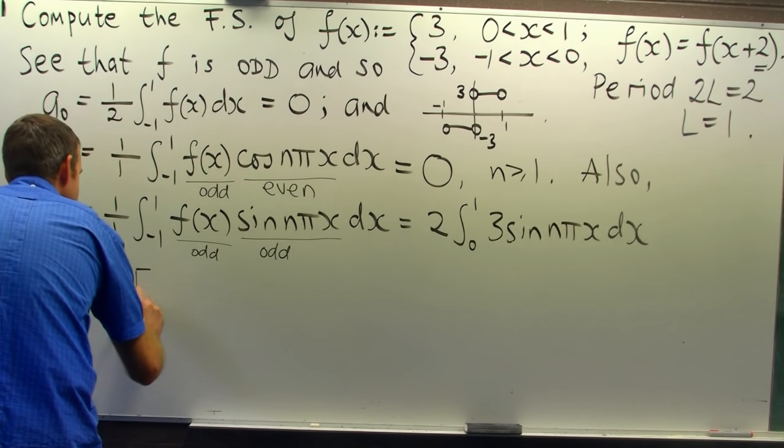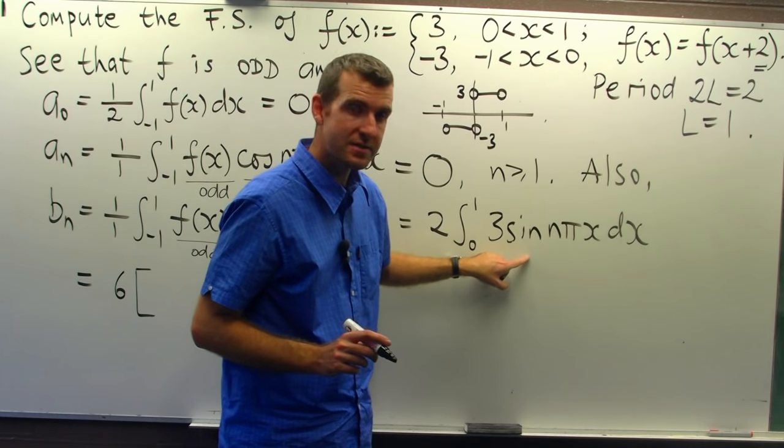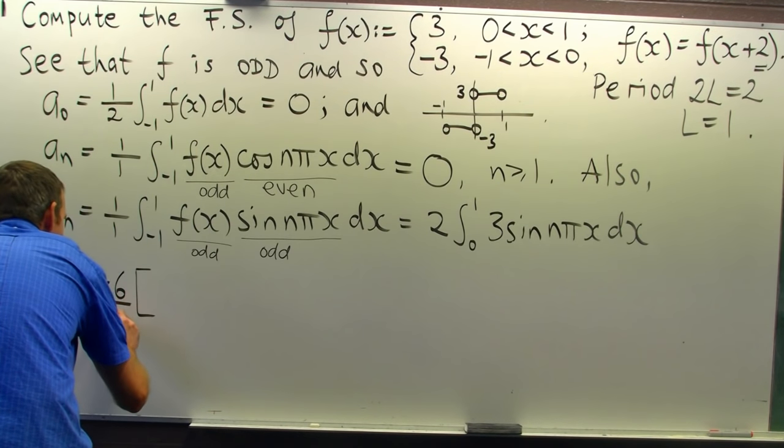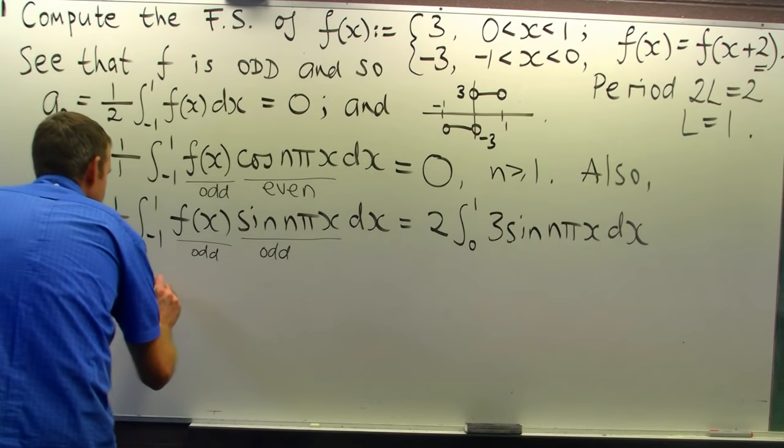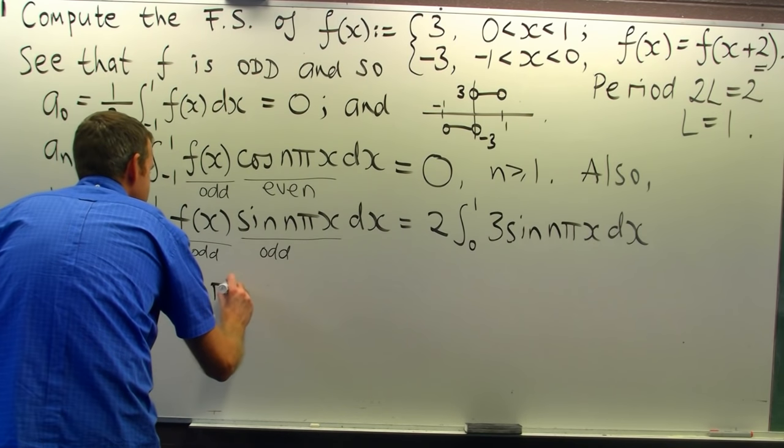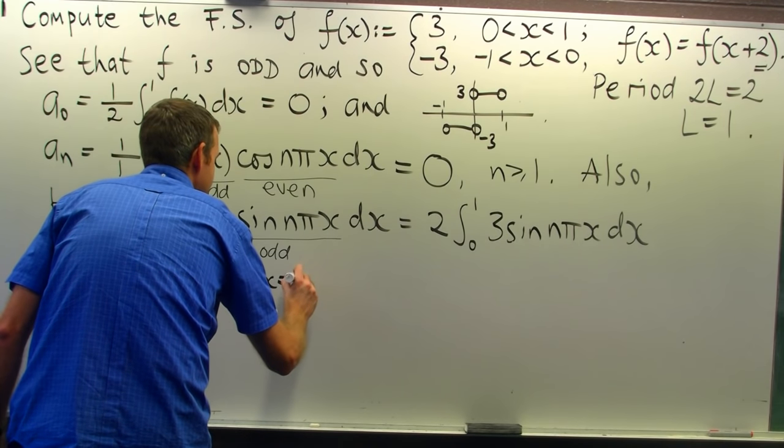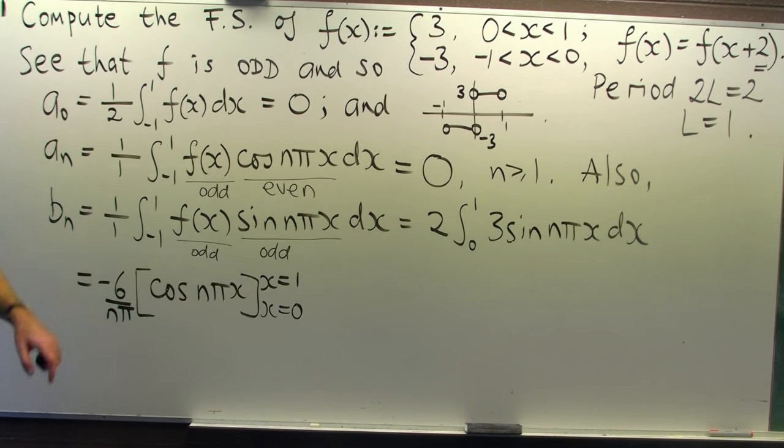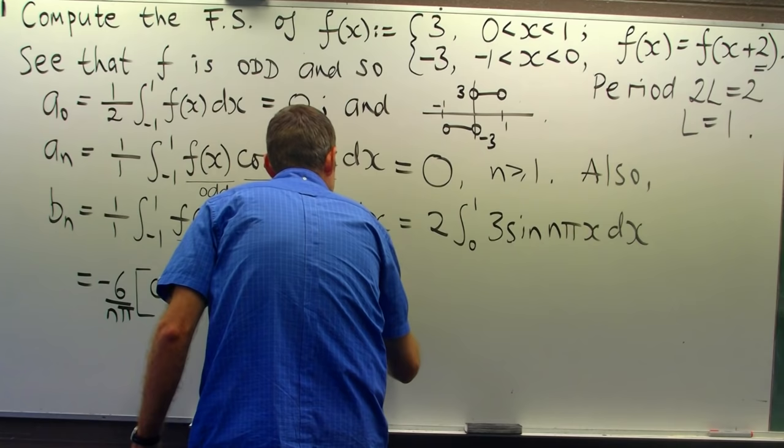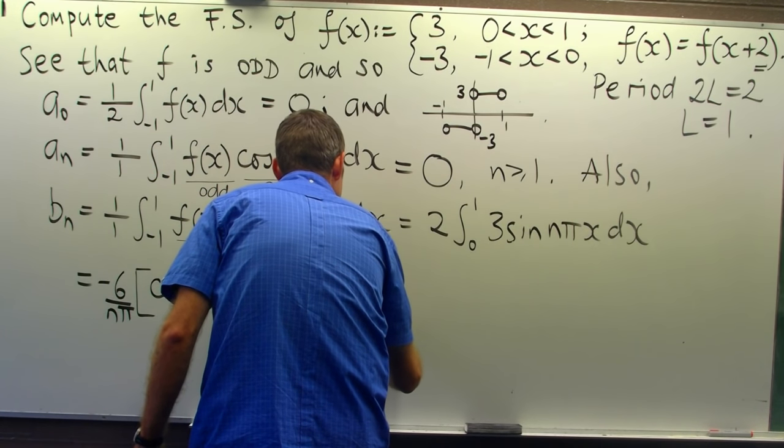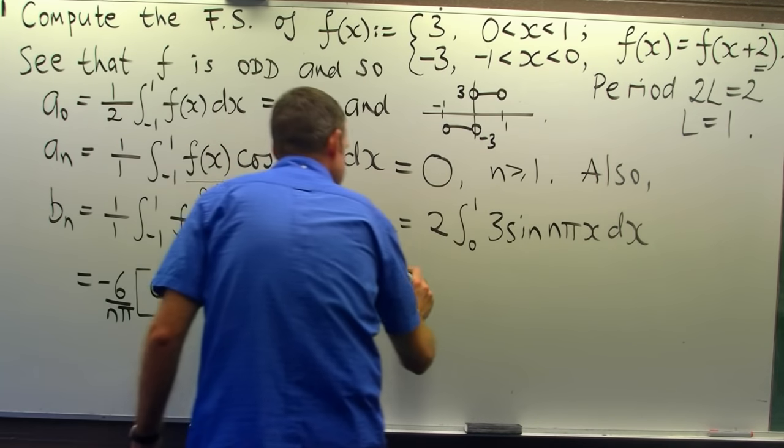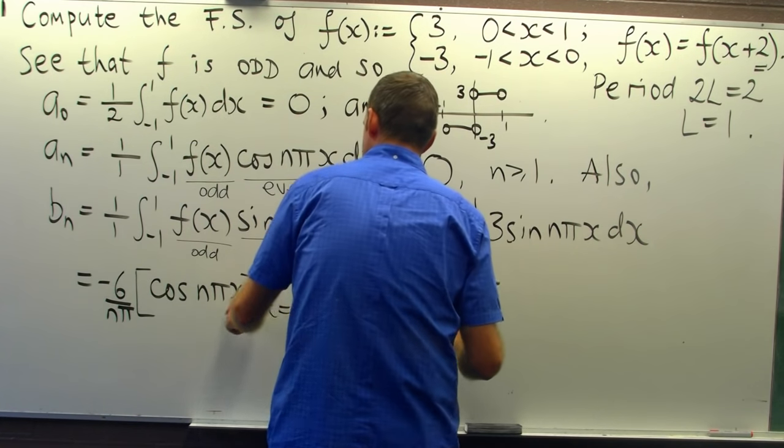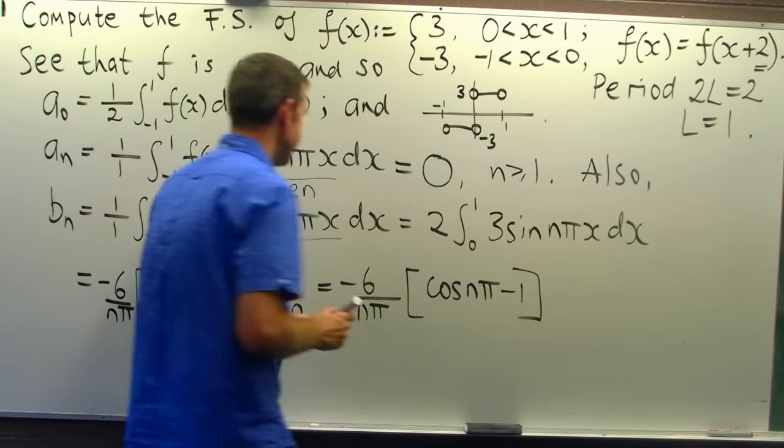So I'll get 6 out the front. When I integrate sin, I get minus cosine and I've got to divide by n pi. So I'm going to bring that minus out the front, divide by n pi, and I'm going to get cos n pi x. Now it's time to put in x equals 1 and x equals 0. So here I'll get cos n pi minus cos of 0, which is just 1.